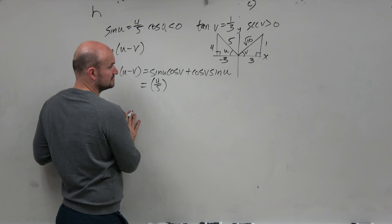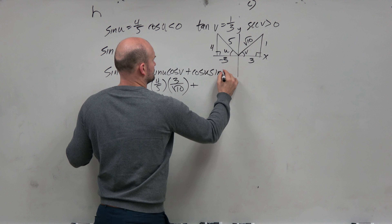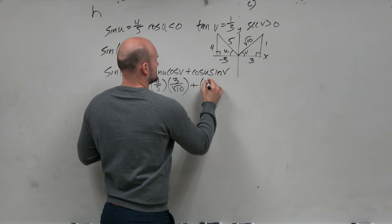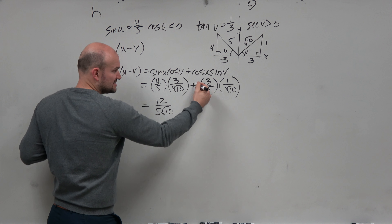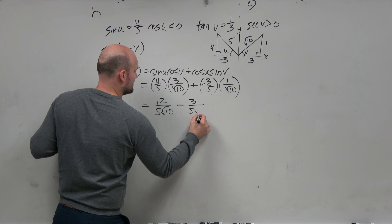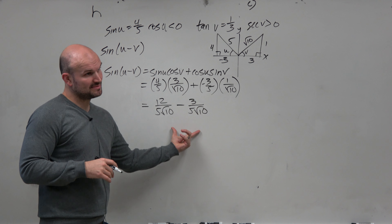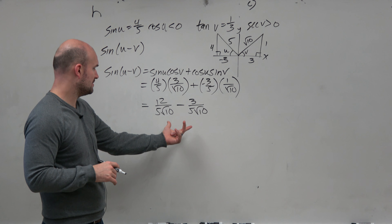Remember, the sine of u minus v is just sine of u times cosine of v plus cosine of u times sine of v. Can I figure out all this information? Sine of u is 4 fifths. Cosine of v is 3 over square root of 10. Plus cosine of u, which is negative 3 fifths. Sine of v is 1 over square root of 10. Let's multiply: here I have 12 over 5 square root of 10, and then this is going to be negative 3 over 5 square root of 10.